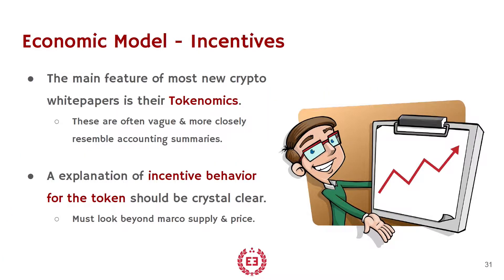Another key component of any token is its economic model — specifically, how do you incentivize people to hold it, to trade it, to put value into it? This is pretty much the extent of what white papers do when it comes to economics; they call it tokenomics. Within a white paper, you might find a tokenomics section talking about incentives — maybe where an airdrop comes in. More often than not, these are vague and usually resemble accounting summaries, like: 'we will release at a specific percentage,' or 'at certain milestones.'